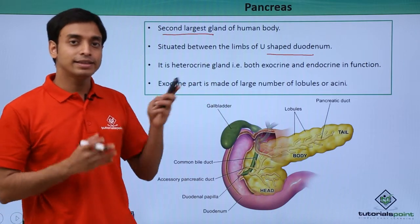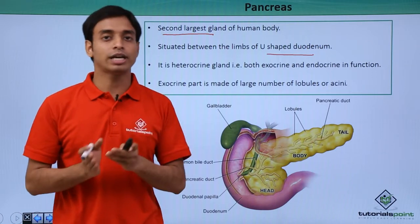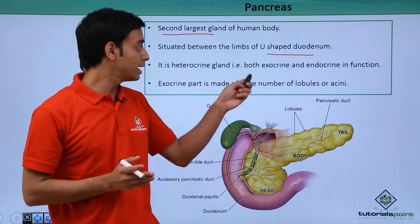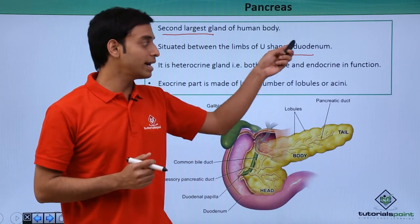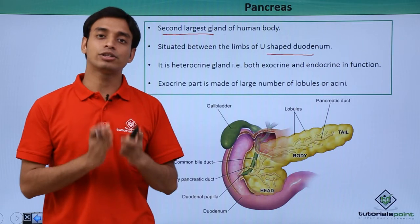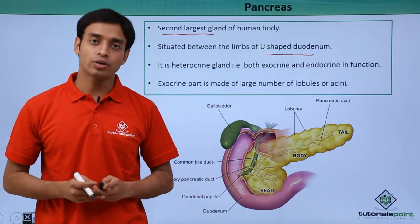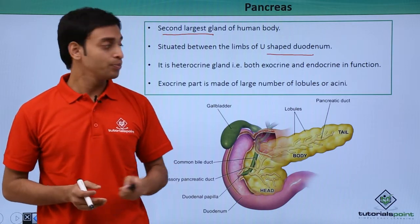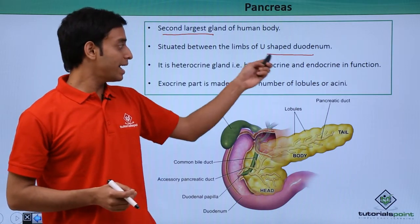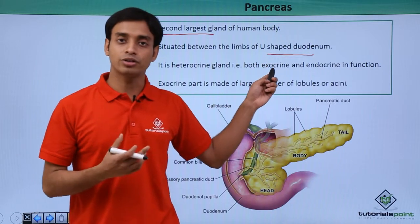The pancreas is a heterocrine gland, meaning it can act as both types of glands — as an exocrine gland and as an endocrine gland. So it is both exocrine and endocrine in function.